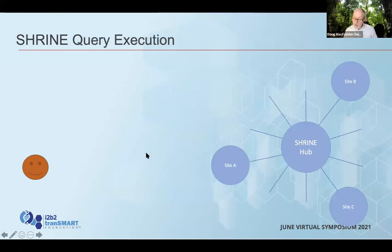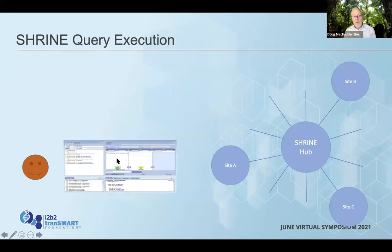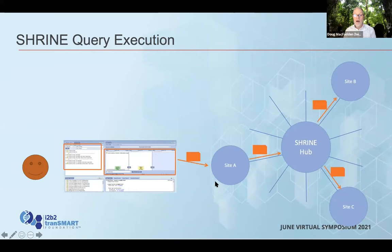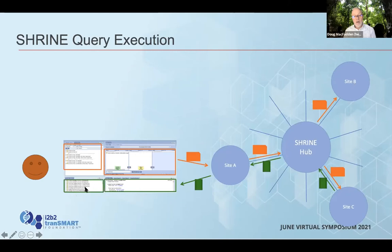In the federated network, here's a quick example of how queries get executed. I have the old user interface here — there's a new one, I just didn't get the new one in in time. A user using this interface selects terms from the ontology, builds their query, and the query goes out into the network. Results come back — a result from one site comes back, it populates your query results and your previous queries, and then over time other sites will come back. You'll have a more complete picture if you wait a few minutes while the slower sites come in.